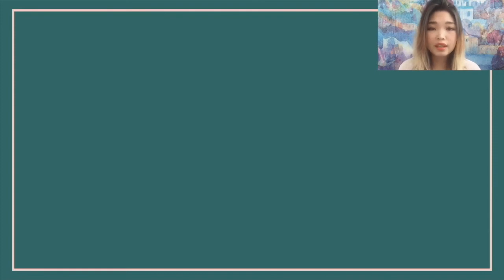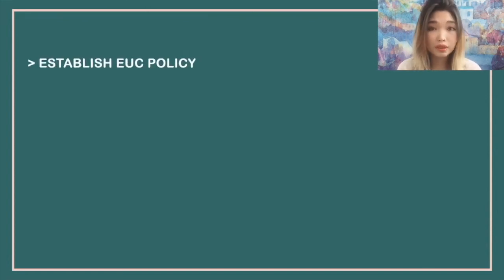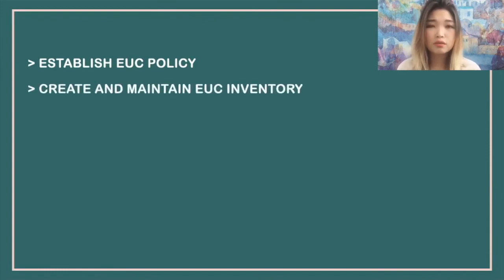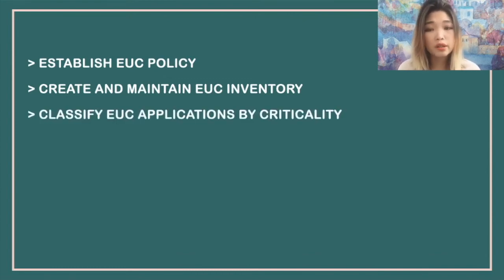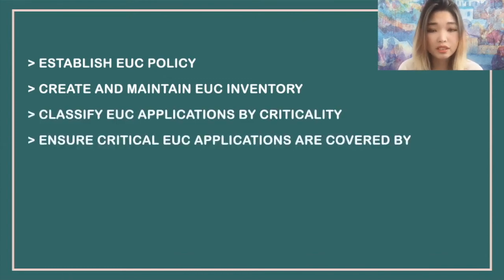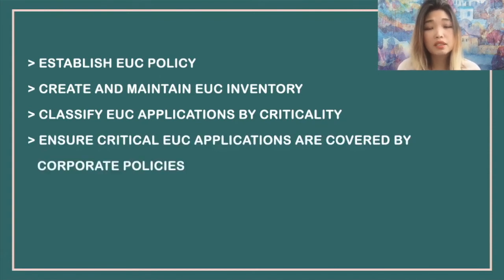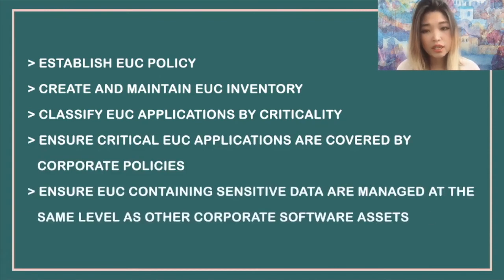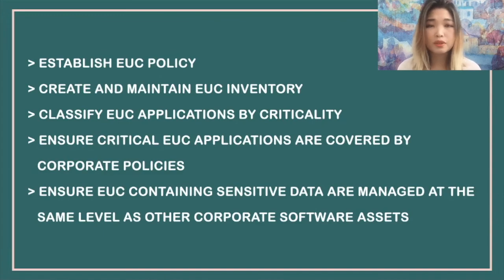So what should companies do to mitigate the risks arising from EUC practices? First of all, a company should develop and enforce an end-user computing policy. The company should also have an inventory of all end-user computing applications and determine a criticality level for every application as part of backup and recovery procedures. End-user computing systems should also be subject to data classification, ensuring that applications containing sensitive data are properly managed at the same level as other corporate software assets.